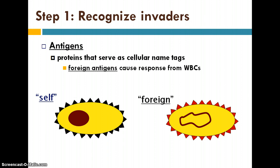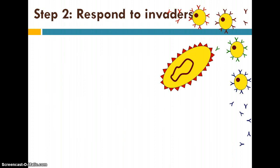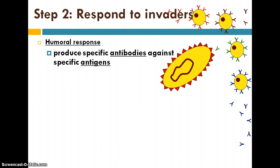So let's begin with humoral immunity. First of all, there has to be some sort of invader and your body has to recognize it right away. It does that by recognizing antigens that aren't supposed to be there. All of our cells have their own antigens and our cells are trained to recognize those. So if another invader comes in — a virus, bacteria, or maybe an organ from a transplant — it's going to have foreign antigens and our cells are trained to recognize that. Then we have to initiate some sort of response, and that's where the humoral response comes in. It produces specific antibodies to match the specific invading antigens.